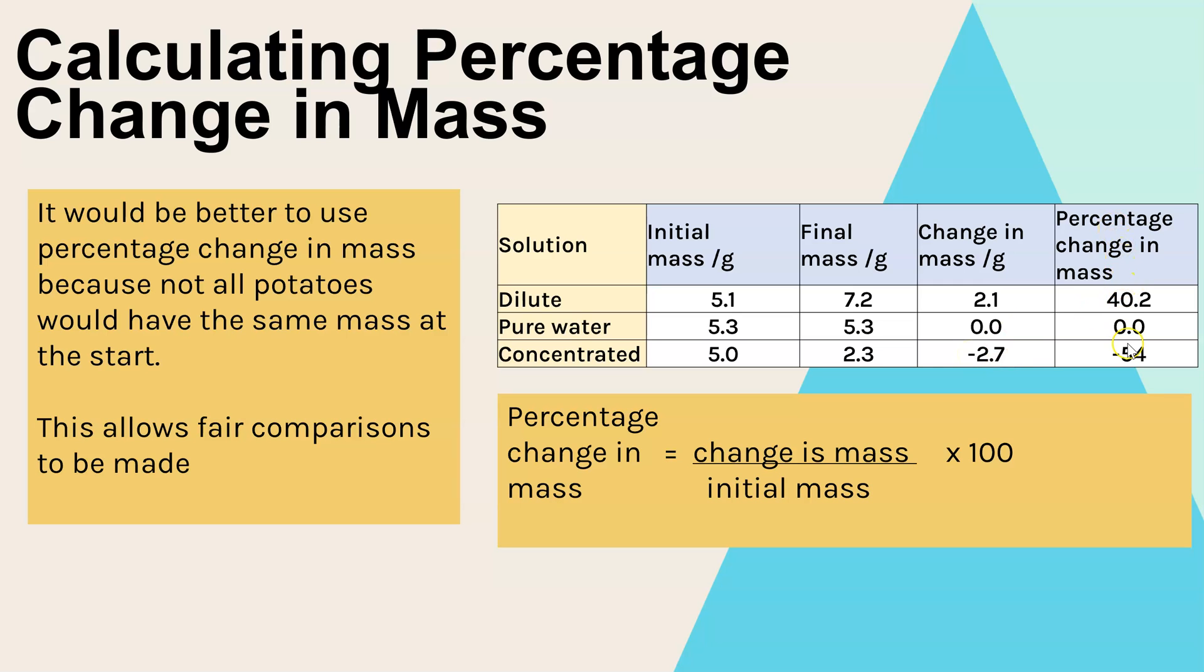And the last column is the percentage change in mass. And this is the formula below for how you would calculate that. So you'd need to do the change in mass divided by the initial mass and then times by 100. And that is one of the math skills that you are expected to know. So you do need to learn that formula.